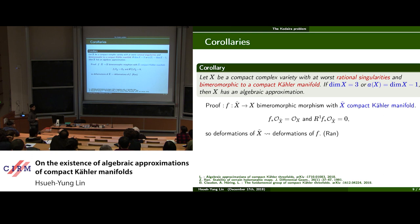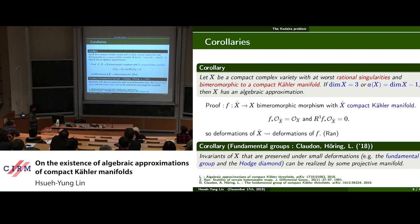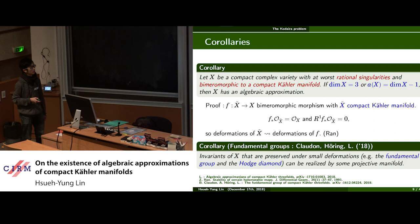Another immediate corollary: let X be as in the corollary above or as in the main result. Then invariants of X preserved under small deformations — for example the fundamental group and the Hodge diamond — can be realized by some projective manifold. In the same joint work with Benoît and Hsueh-Yung, we also obtained the result for fundamental groups.